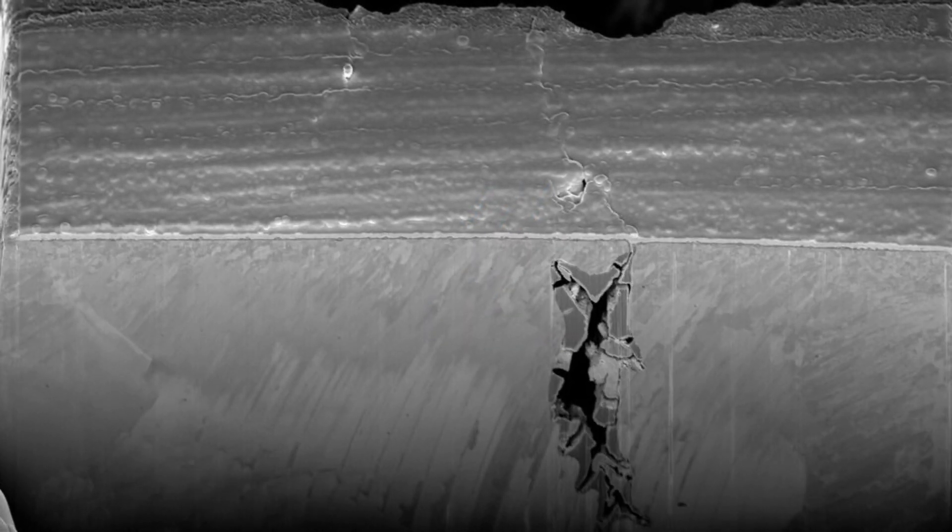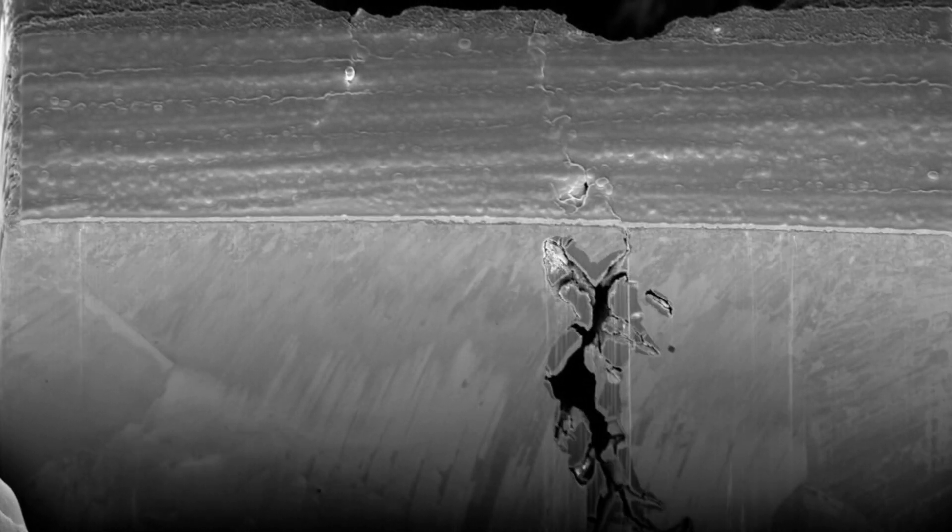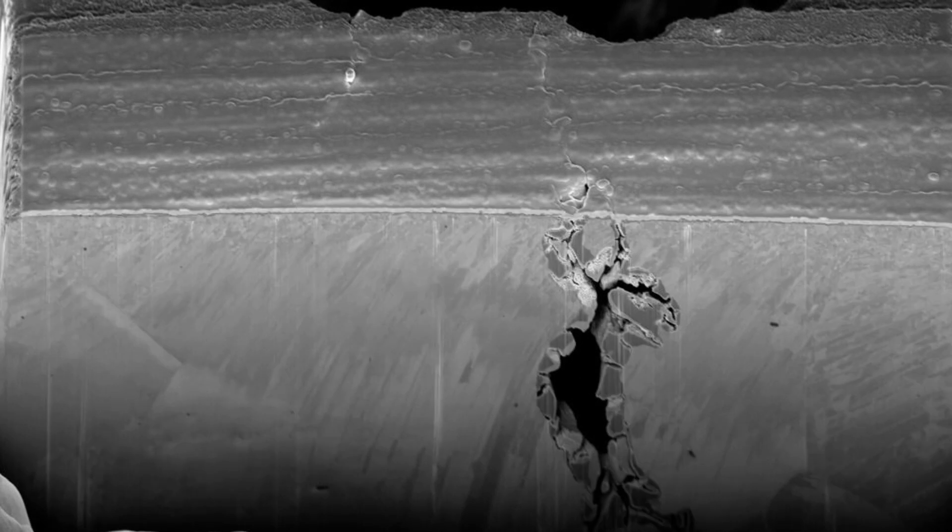This work has identified that coarse grinding in preparation for welding can be detrimental to the integrity of pipeline materials. A practical solution would be to carry out progressive grinding of the surface from coarse to increasingly fine grinding to minimize the damage induced in the material.